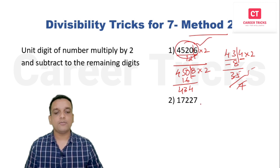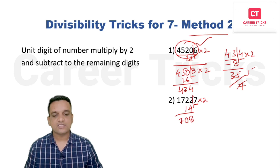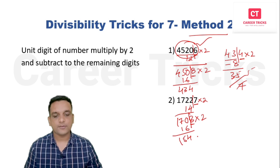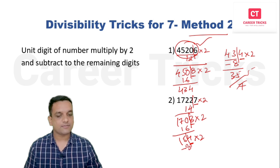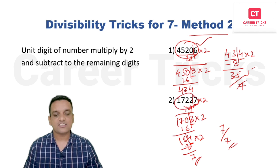Solving the next problem with method two: unit digit is 7 (from number 1 7 2 2 7), multiply by 2 = 14. Subtract from remaining digits 1722: 1722 – 14 = 1708. Unit digit 8, multiply by 2 = 16; remaining 170. 170 – 16 = 154. Wait — we get 451. Unit digit 4, multiply by 2 = 8; remaining 15. 15 – 8 = 7. Since 7 is divisible by seven, this number is divisible by seven. This is the second method.